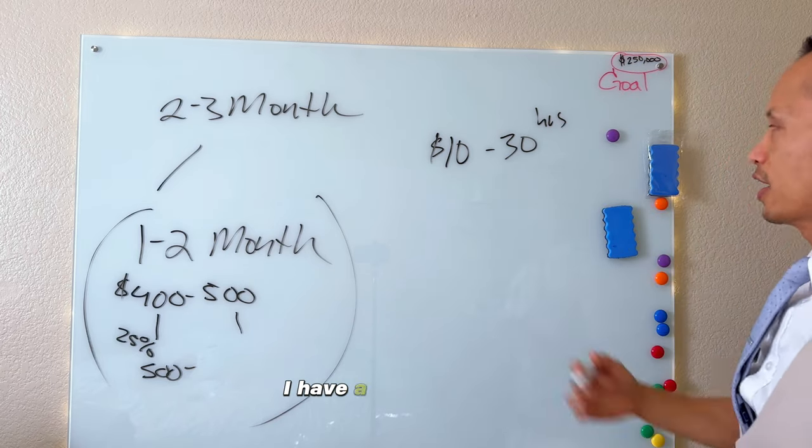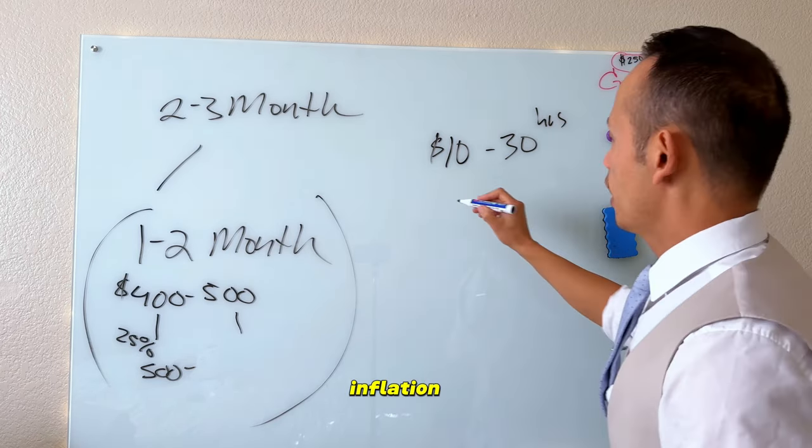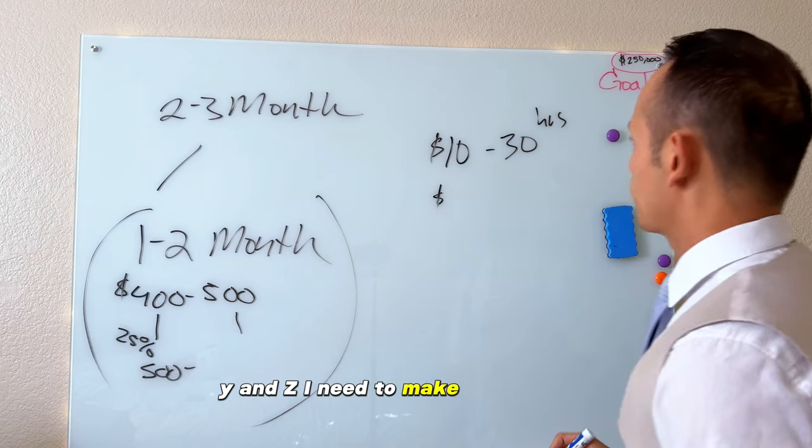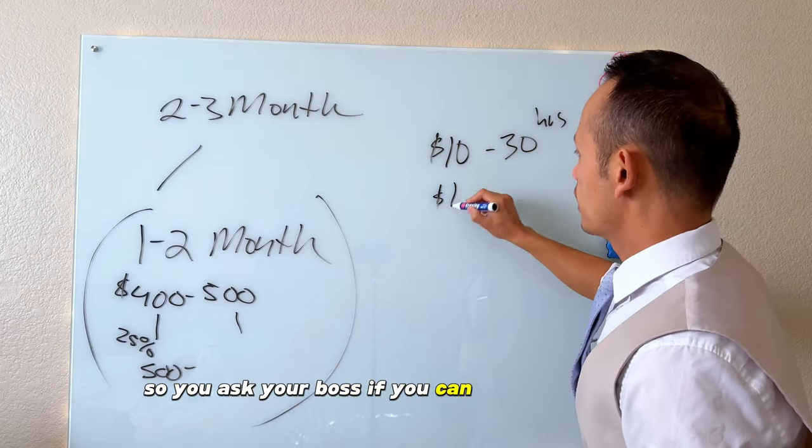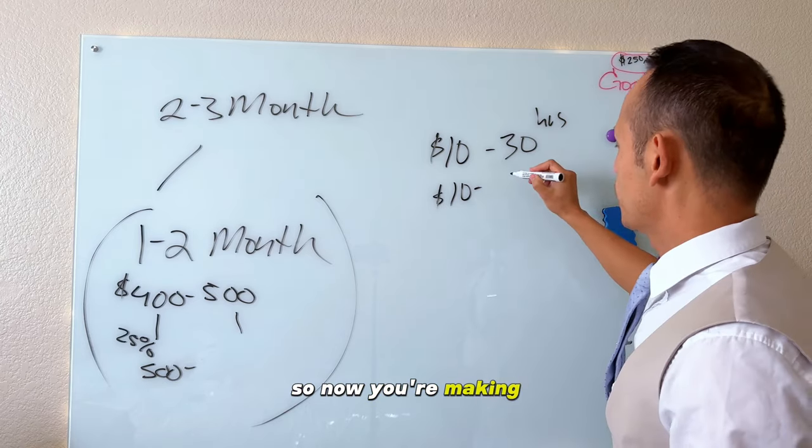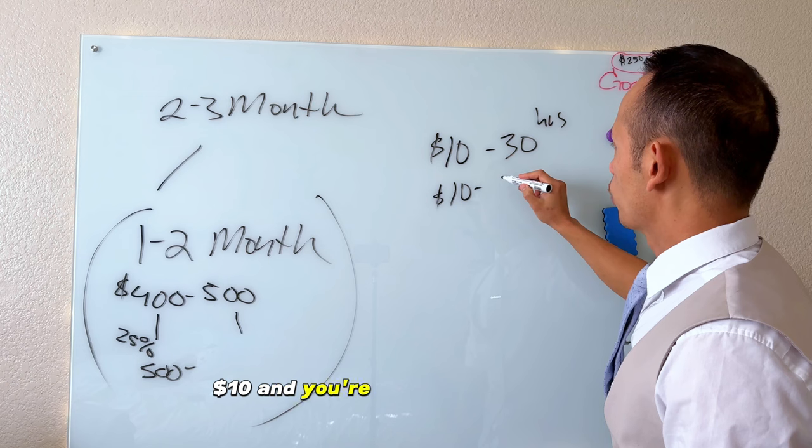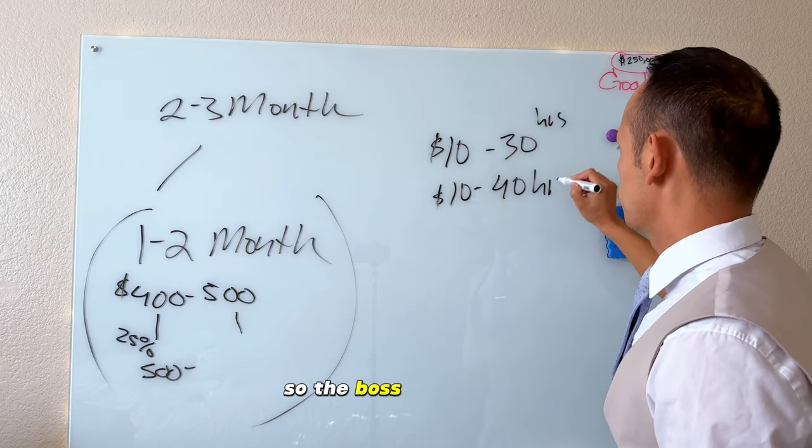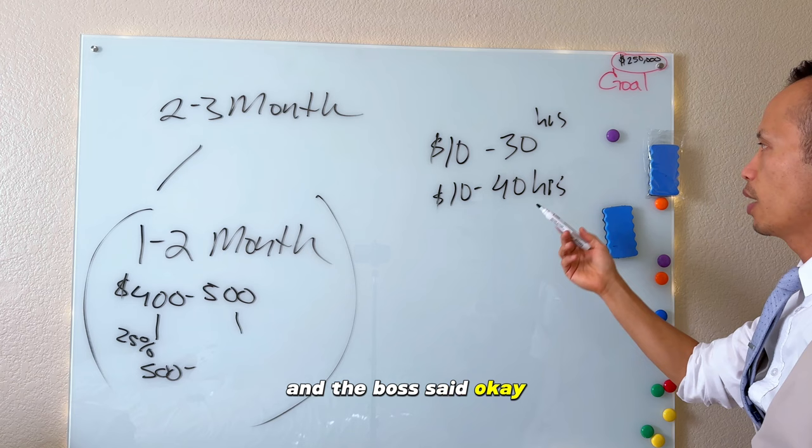So you ask your boss if you can get an extra shift, some more hours, so now you're making $10 and you're working 40 hours. So the boss approved it, checked the budget, and the boss said, 'Okay, we'll go ahead and give you an extra 10 hours that way you can have a bigger check.'